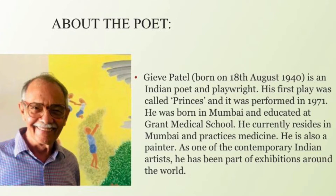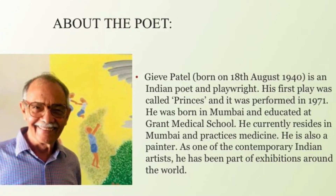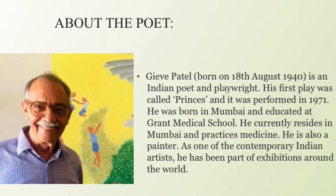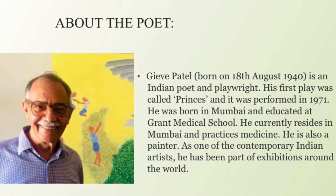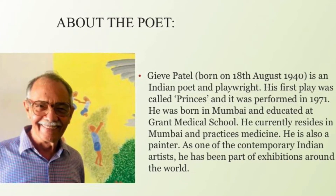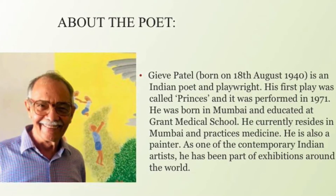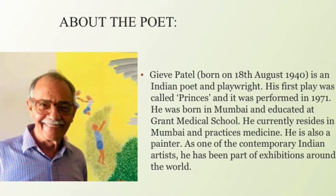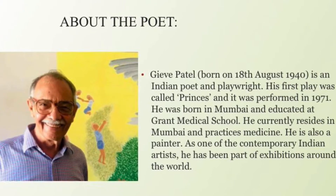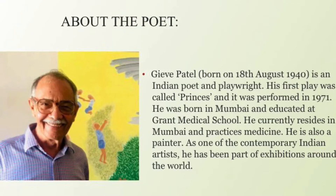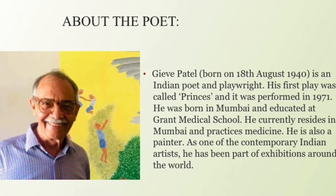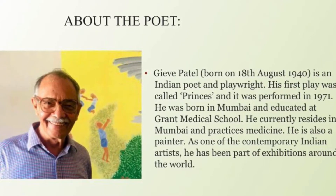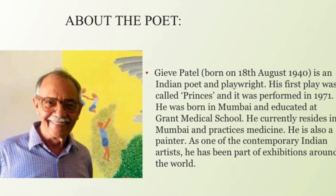His poems speak of deep concern for nature and expose man's cruelty to it. His works include poems: How Do You Withstand in the year 1966, Body in 1976, and Mirrored Mirroring in 1991. He has also written three plays.